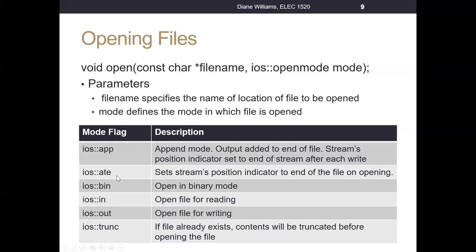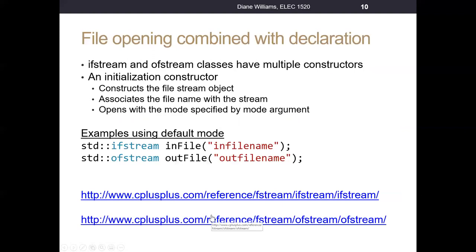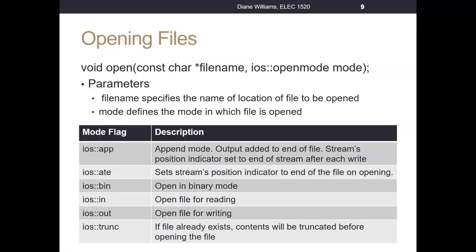There's another mode called ATE, which can be used for reading or writing — it sets the stream's position indicator to the end of the file upon opening. We won't likely use ATE in this course. If you want to open a file in binary mode, by default C++ opens files as text files, so you'd need to use the BIN flag. These flags can be combined using a bitwise OR. Typically we'll open files for reading (IN mode), writing (OUT mode), or truncation mode (TRUNC), where if the file already exists its contents will be truncated before opening.